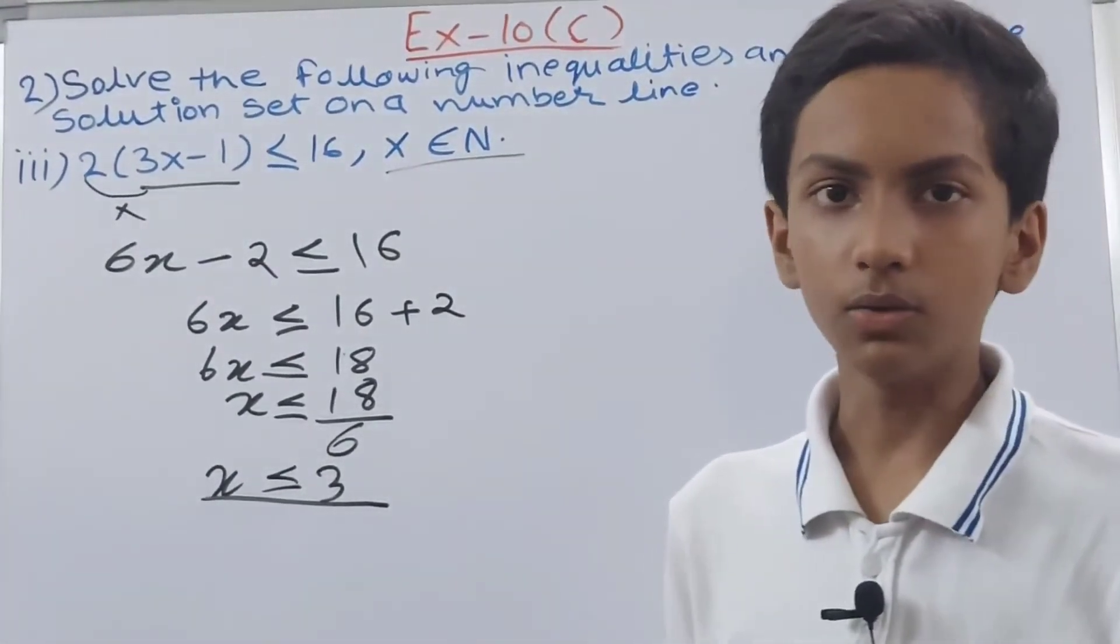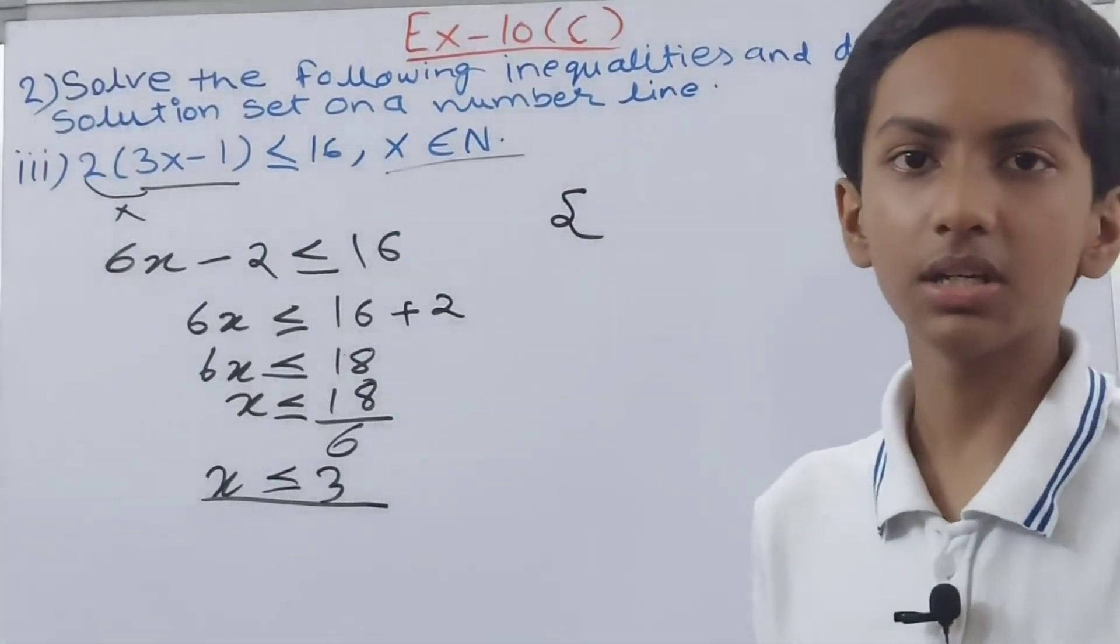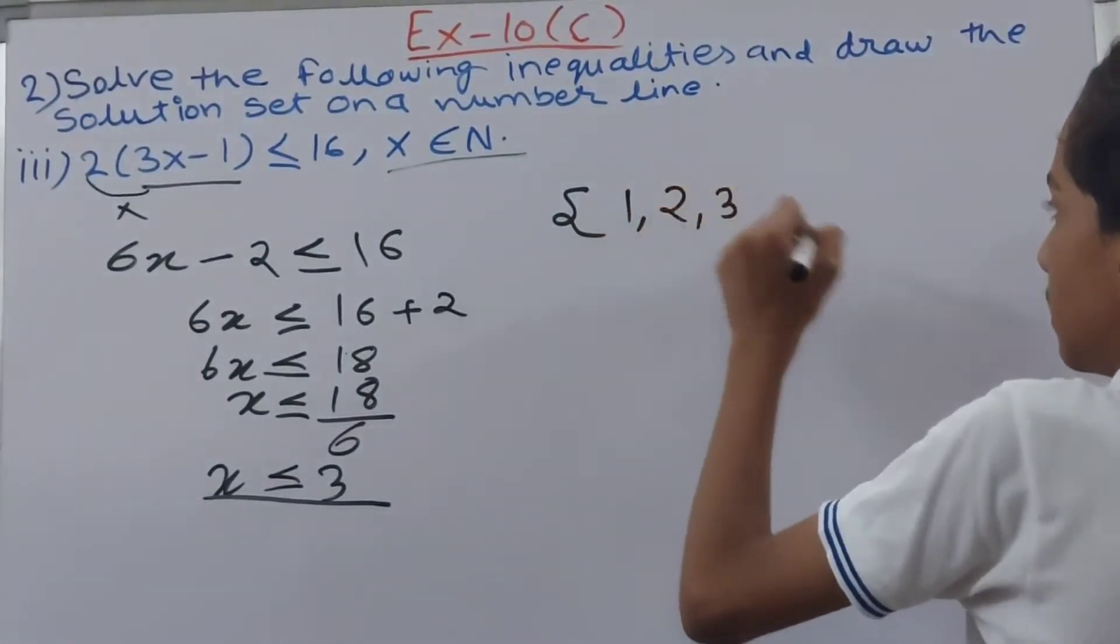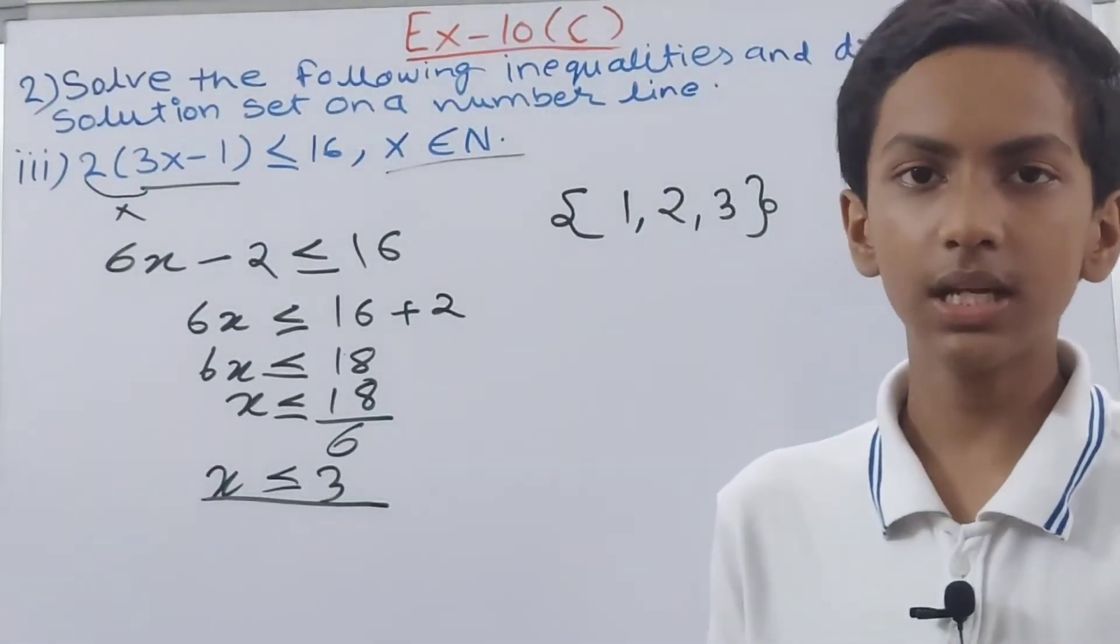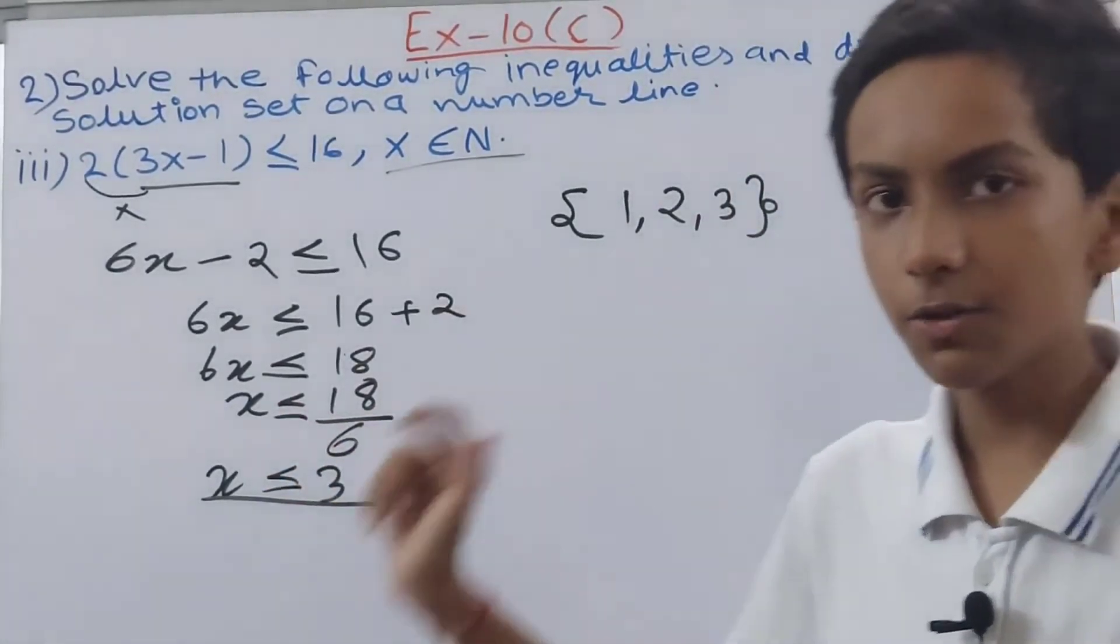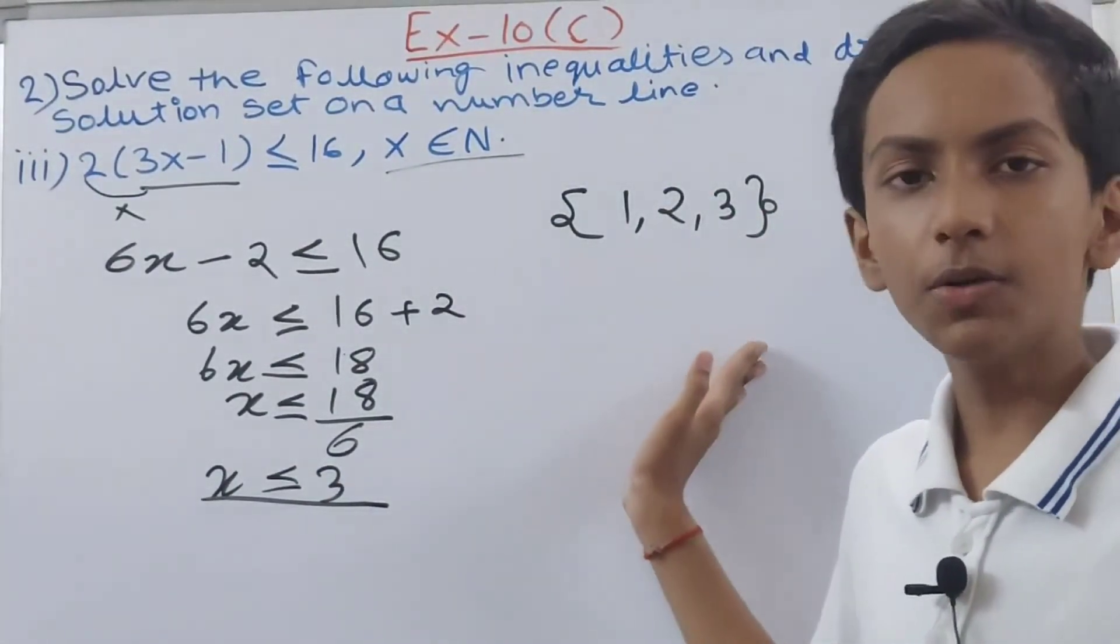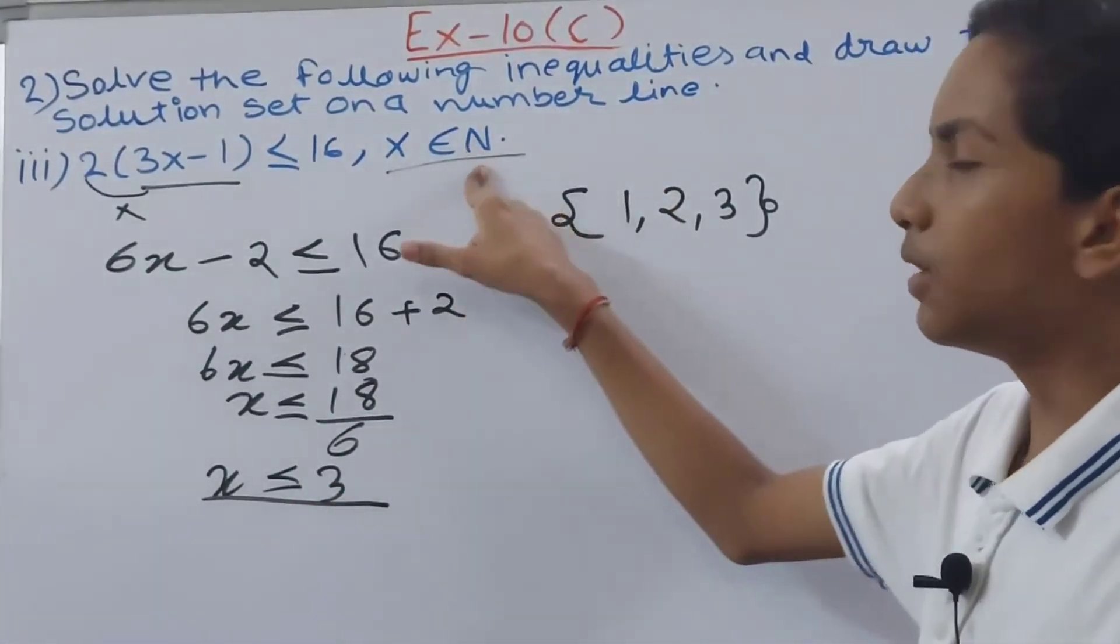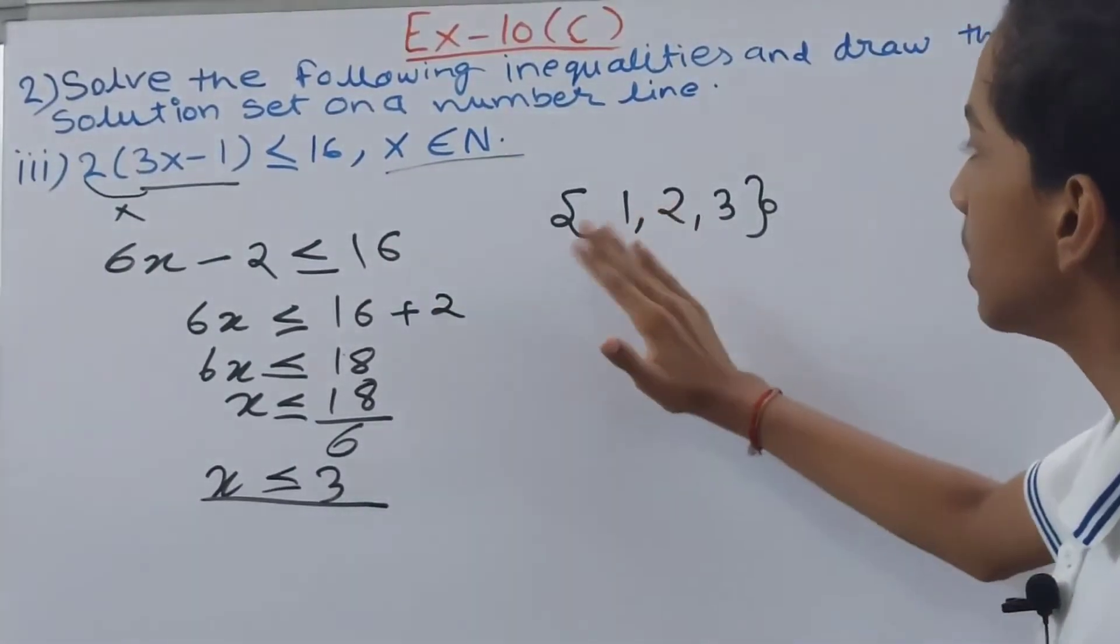And now we write the solution set. So for the solution set only 3 numbers can be written here: 1, 2 and 3. No need to write the dots even. Why we are writing 1, 2 and 3 only? Because value of x has to be less than 3 or equal to 3. Now you will ask why have I not written 0, minus 1, minus 2. Because x belongs to natural numbers and that starts from 1 only. So we cannot go any further beyond. So 1, 2, 3.